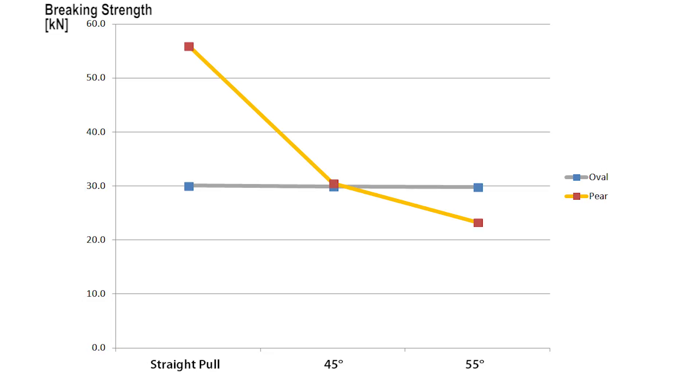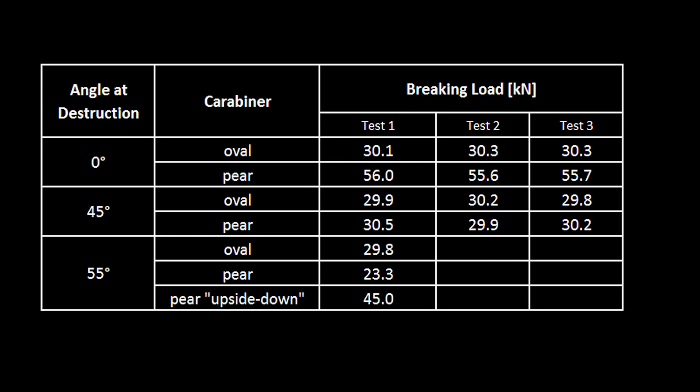So as a conclusion we can say that if there is no other option than to use a carabiner under treeload, then better take an oval instead of a pear-shaped one. And if you only have a pear-shaped one, then use it upside down.